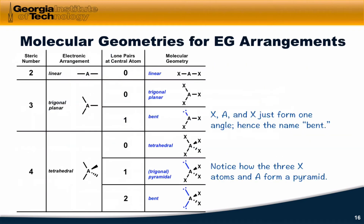By adding lone pairs to the different electron group arrangements, we can systematically generate the different types of molecular geometries. For a steric number of two — the linear electron group arrangement — we can really have no lone pairs at the central atom. If we do have a lone pair on A, then geometry becomes a non-issue since there's only one bond to another atom in the structure. So the only molecular geometry possible for an electron group arrangement of linear is the linear geometry.